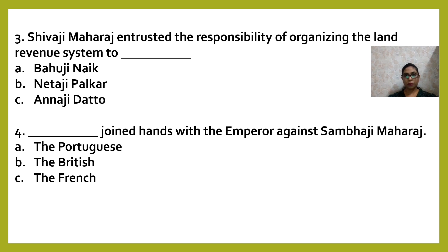The fourth one: DASH joined hands with the emperor against Sambhaji Maharaj. Option A: The Portuguese. Option B: The British. And Option C: The French.